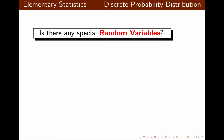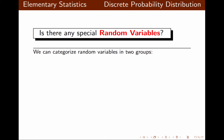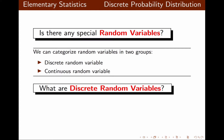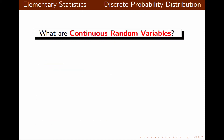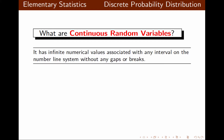Are there any special random variables? Generally, you can categorize them in two groups: discrete random variable and continuous random variable. A discrete random variable is a numerical value associated with the desired outcome and has a finite number of values, or infinitely many values but countable. A continuous random variable has infinite numerical values associated with any interval on a number line system without any gaps or breaks. Basically, discrete random variables are countable, and continuous random variables are measurable.